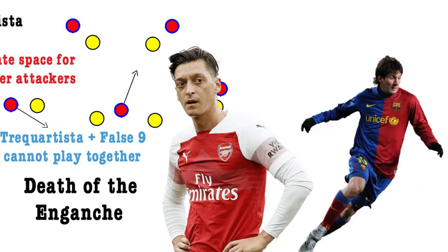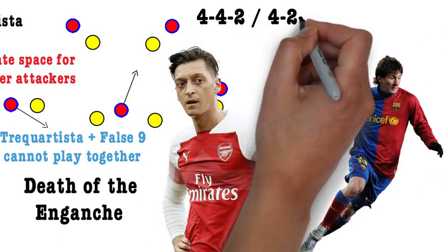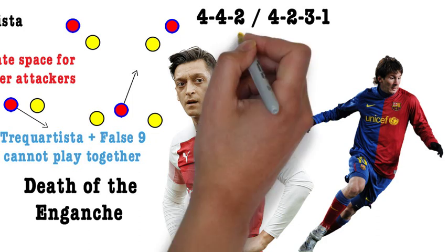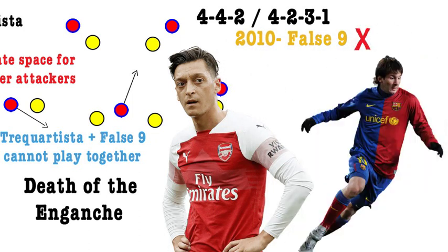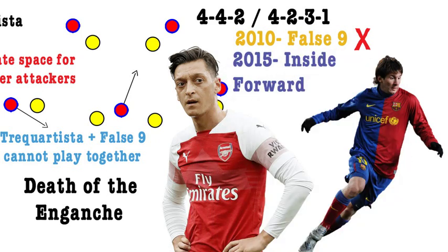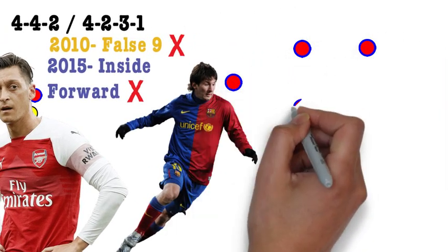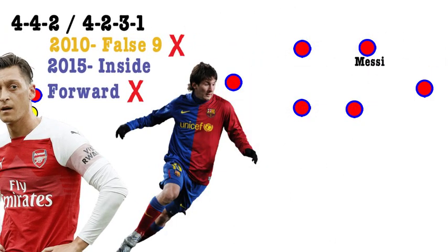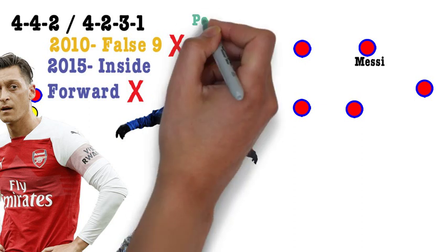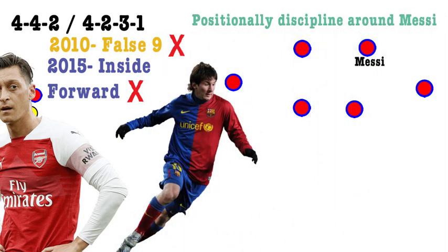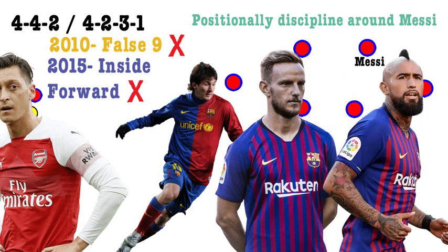With Valverde opting to use a 4-4-2 or 4-2-3-1 variation system, the role Messi played in 2009-2010 as a false nine, and in 2014-15 as an inside forward from the right, are no longer there. Messi now plays in a front two behind Luis Suarez, or this season most probably Antoine Griezmann. Messi is ridiculous in terms of creativity and goal-scoring output, so it only makes sense to give him ultimate freedom in the system, playing as a trequatista, where players around him remain positionally disciplined in possession, and the likes of Rakitic and Vidal are there to make up for the lost defensive output, with Messi maintaining his attacking position out of possession.